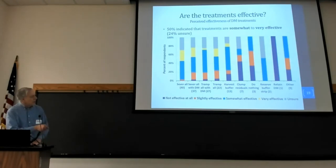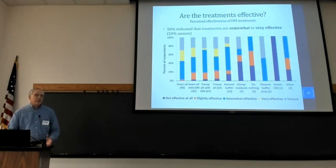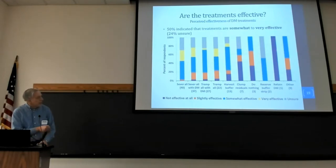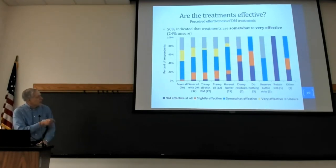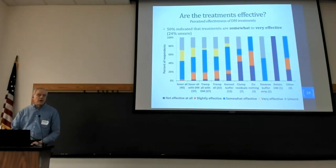The most common treatments being applied were severing or trampling all stems at least five feet in height, and having a harvest buffer between the dwarf mistletoe-infected area and non-infected areas — on average about 116 feet. There were other approaches including retaining all dwarf mistletoe. In terms of effectiveness, the things that are not effective appear at the bottom of the graph, while those with more blue and yellow are more effective. From the perspective of respondents, the things you're doing tend to be fairly effective in controlling dwarf mistletoe on the ground.